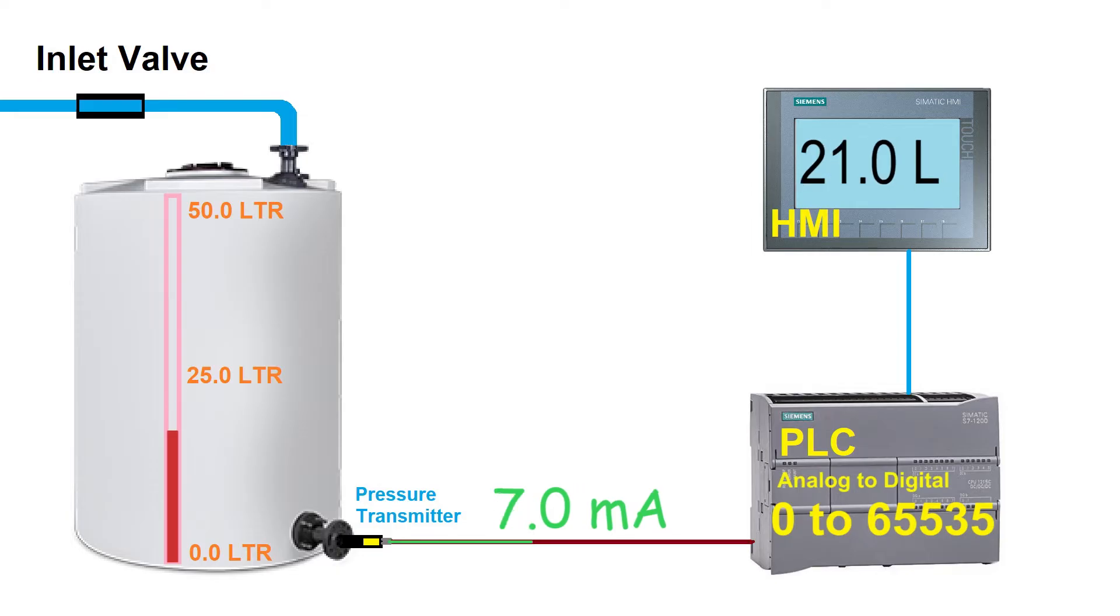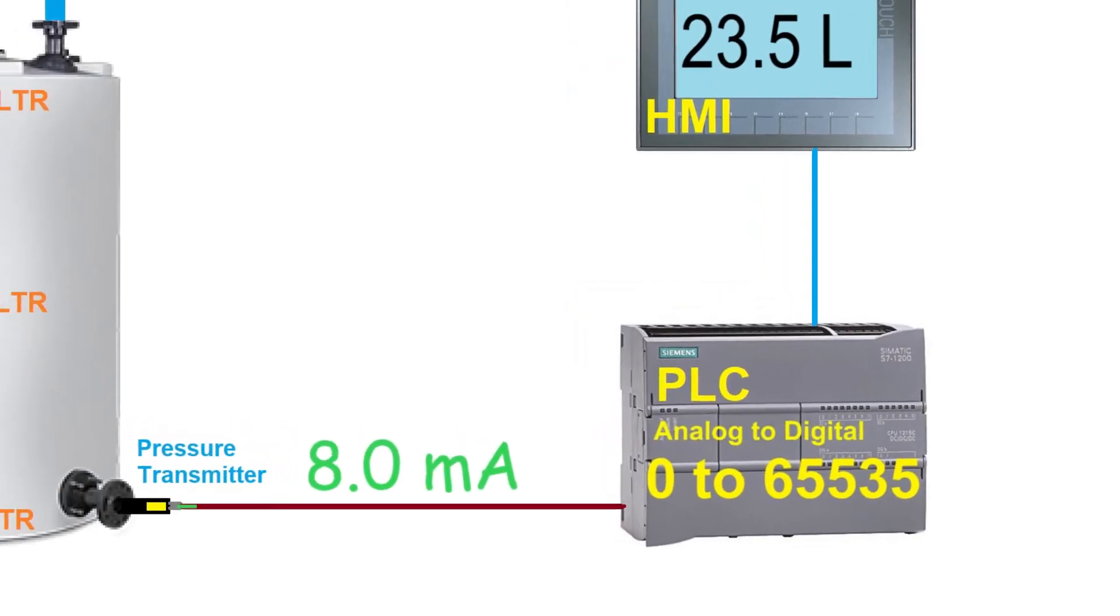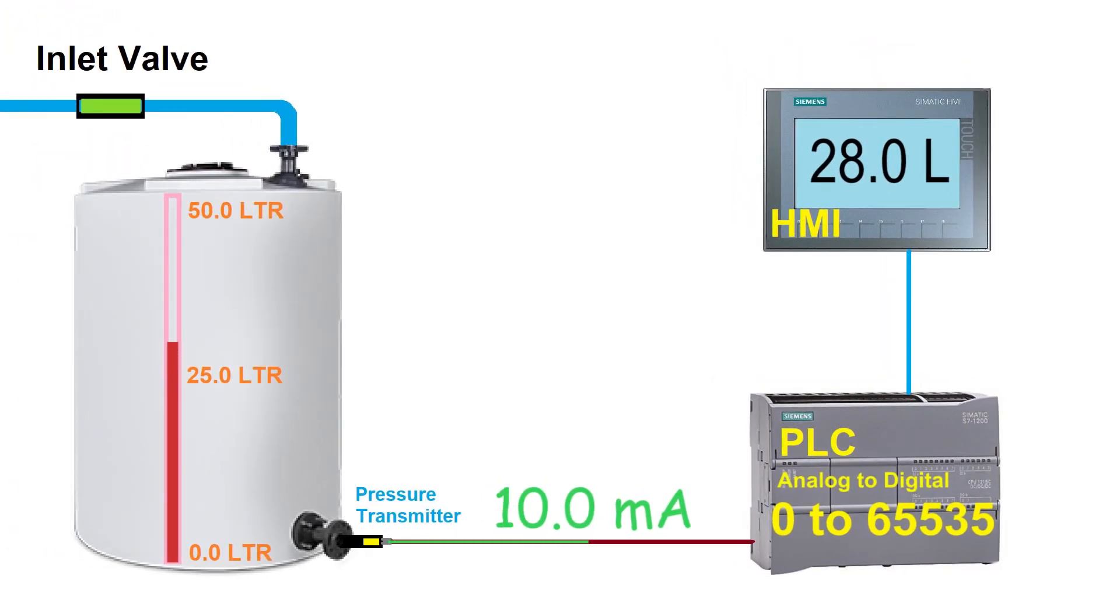Now this analog signal is converted to digital values from 0 to 65535 by the PLC. Usually it is referred as a raw sensor value and then scaled to 0 to 50 liters by PLC using some formula and this will go to the HMI display.